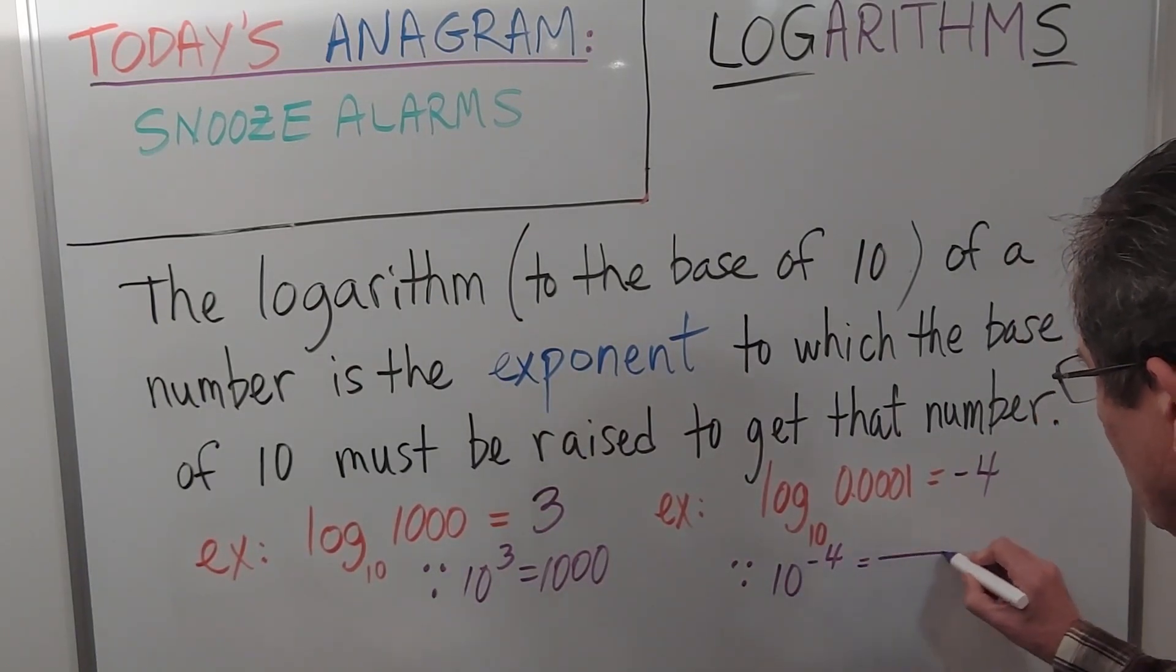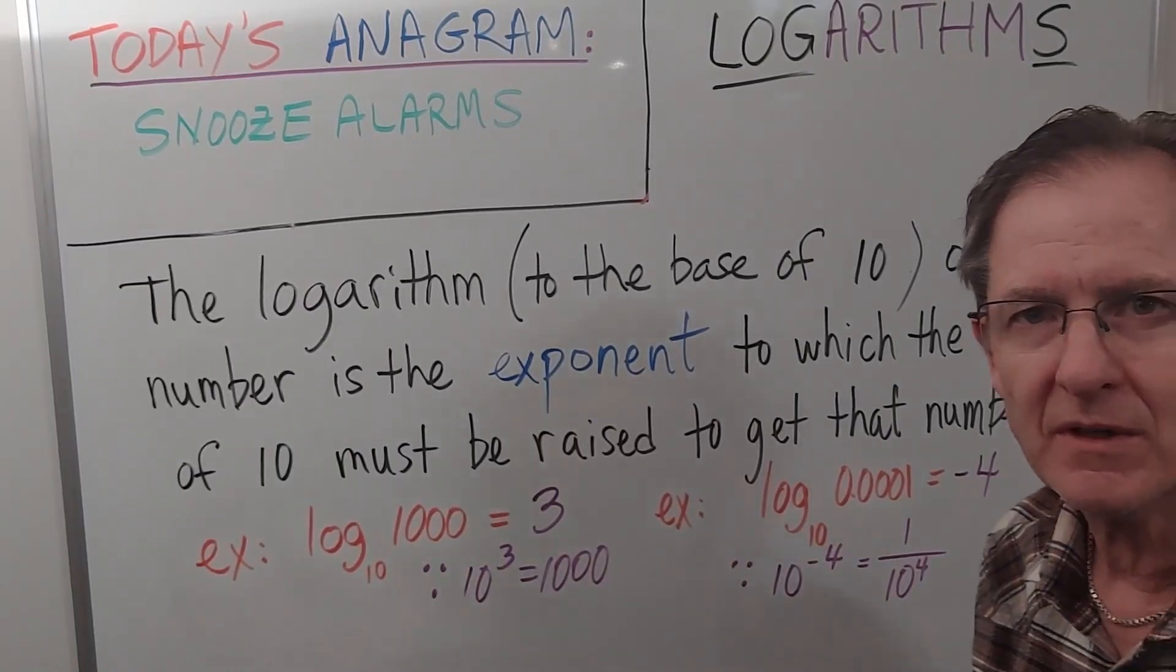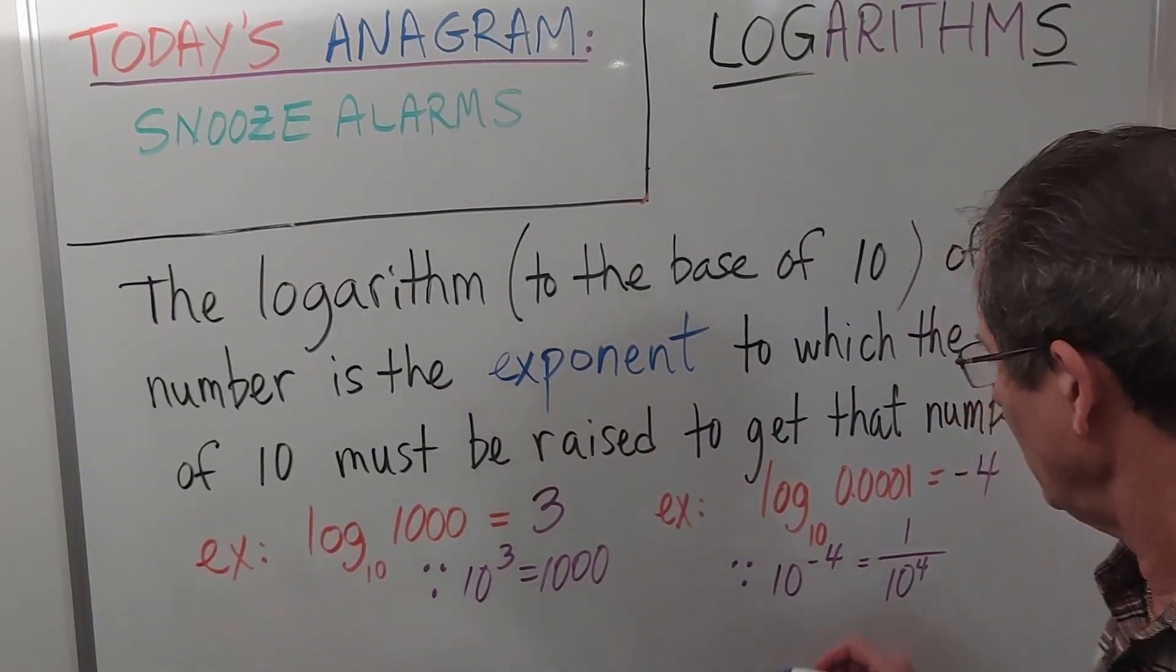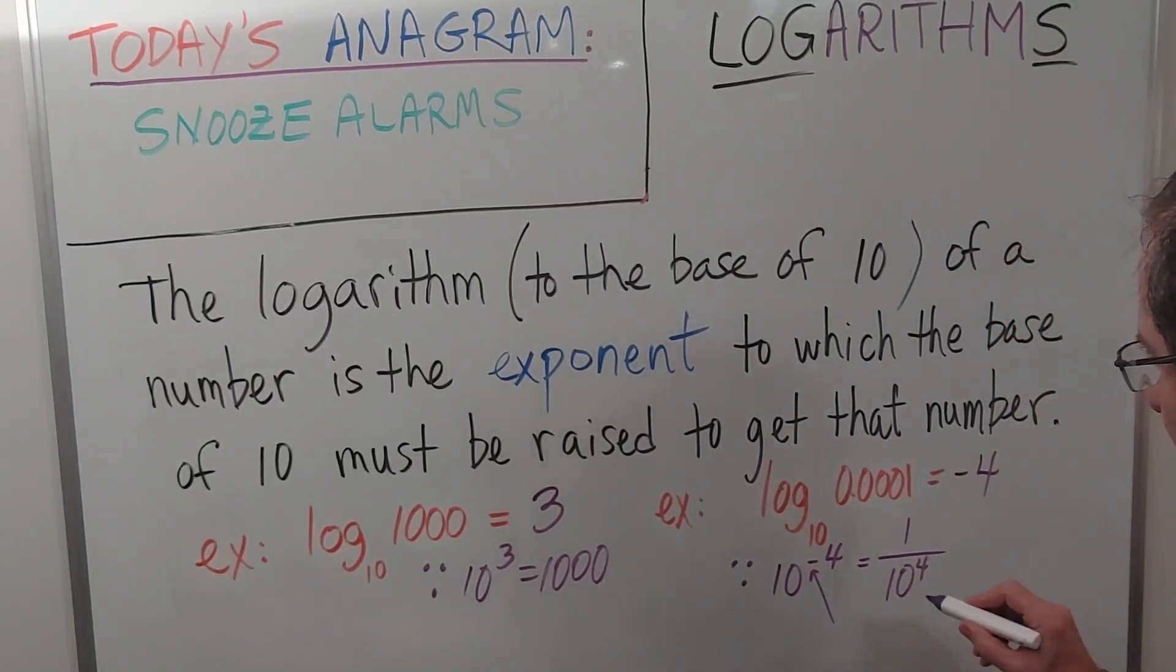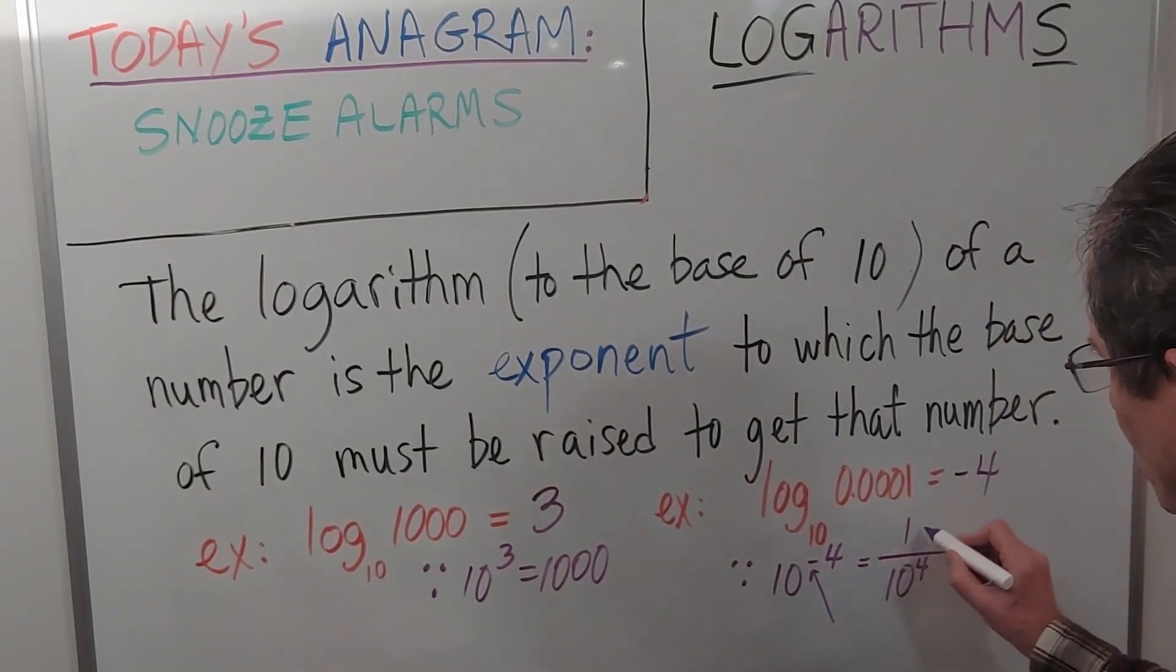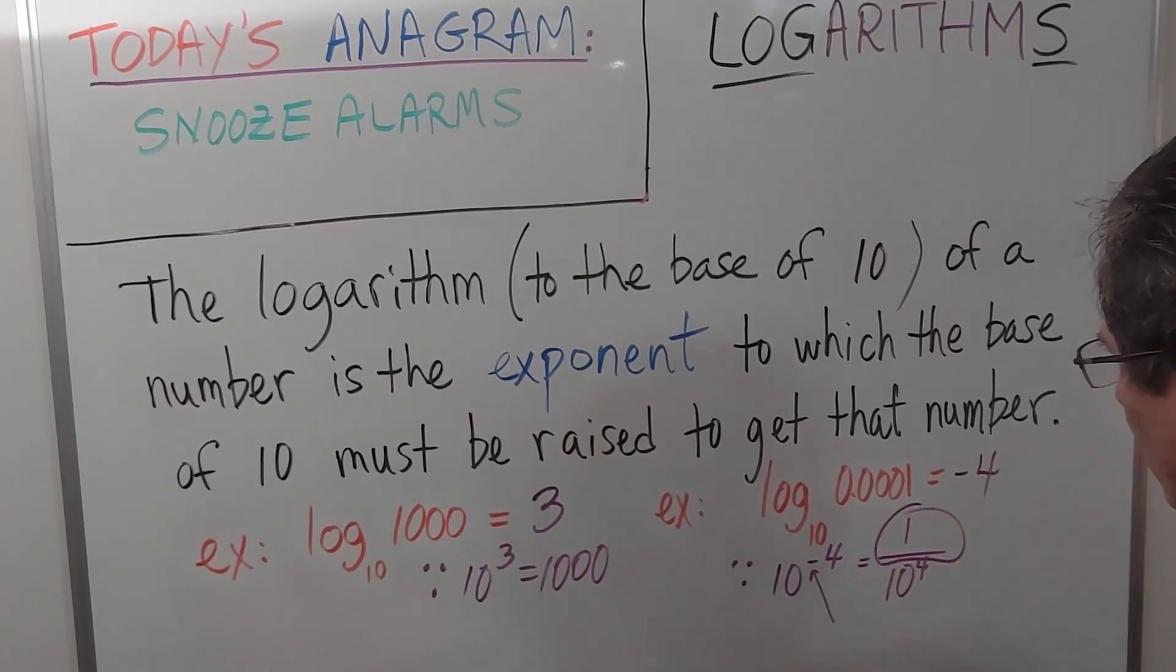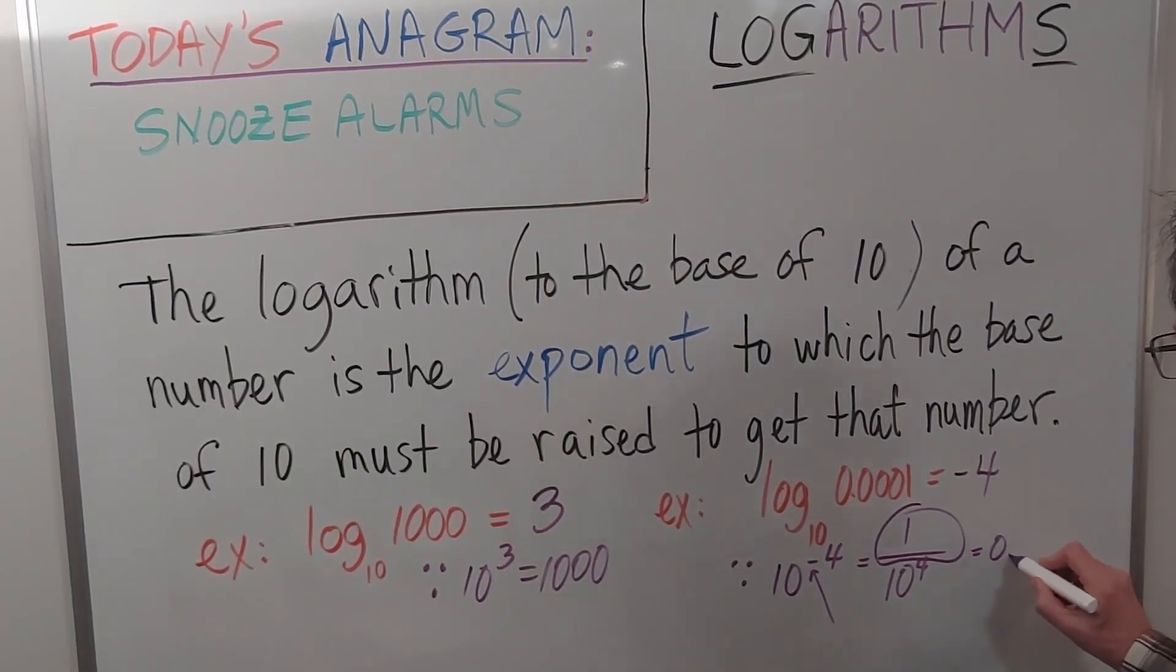Which is equal to 1 over 10 to the positive 4. If you haven't seen that before, just remember that a negative exponent does not produce a negative number, it gives you a fraction. The negative sign is replaced by the 1 over. You keep the 10, you keep the 4, and of course that is 0.0001.